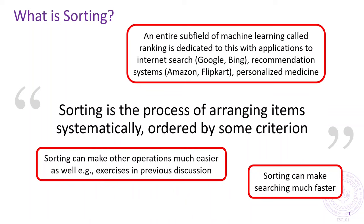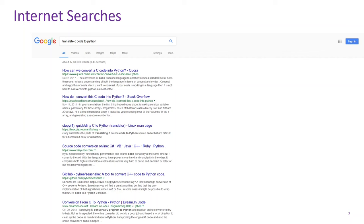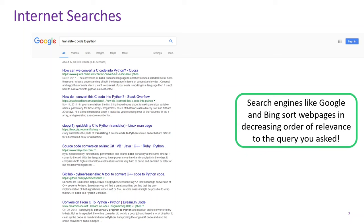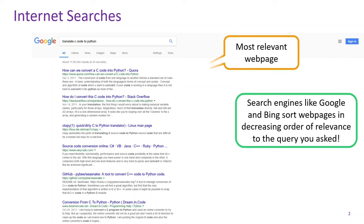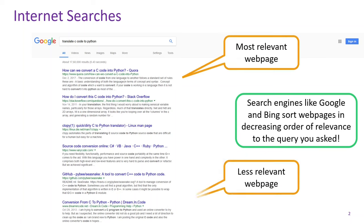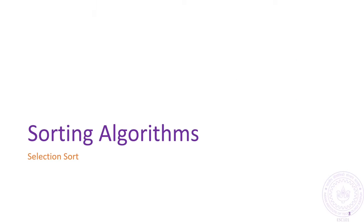In fact, an entire sub-area of machine learning called ranking is closely related to sorting and has several applications such as internet search, recommendation systems and others. For example, when you type in a query on an internet search engine like Google or Bing, what you get is actually a sorted list of web pages in decreasing order of relevance to the query you asked. We will start our discussion with two simple but not so fast sorting algorithms.